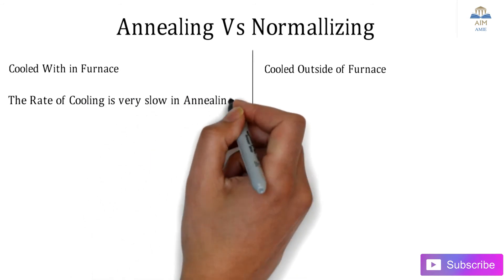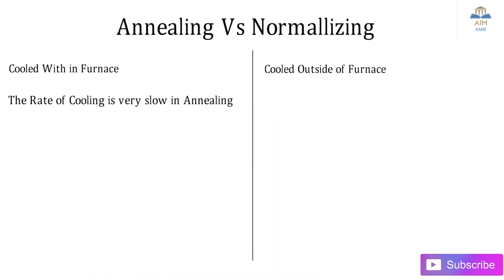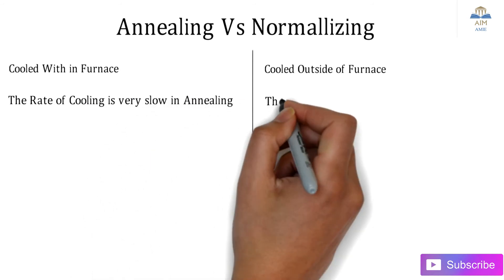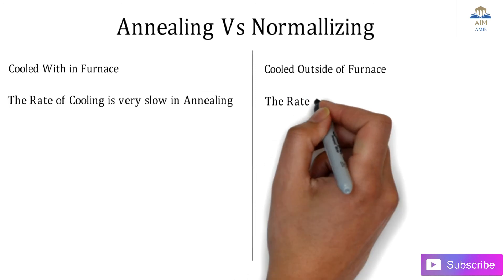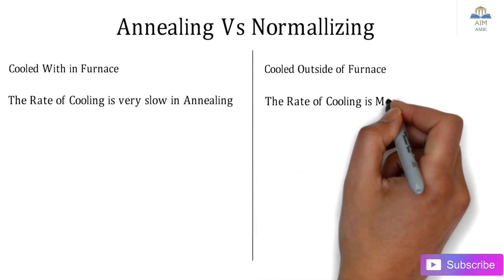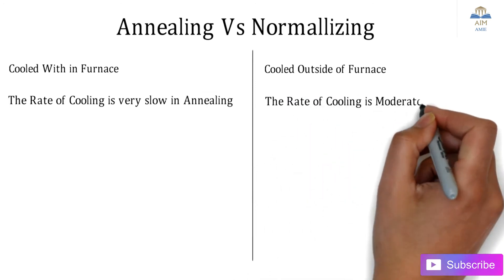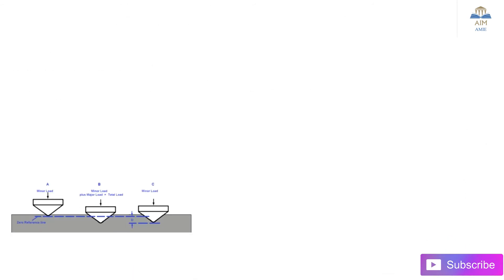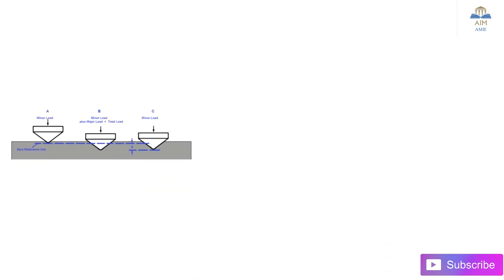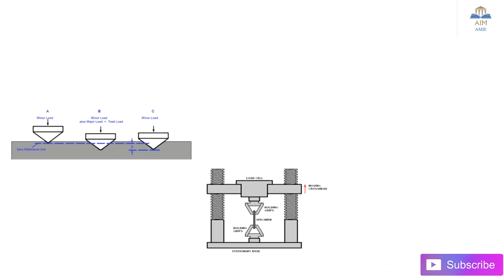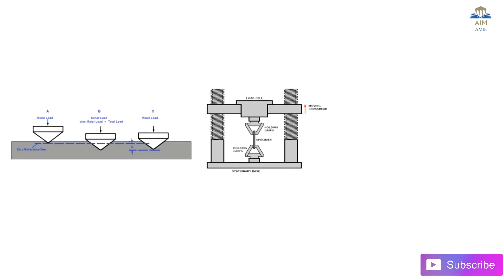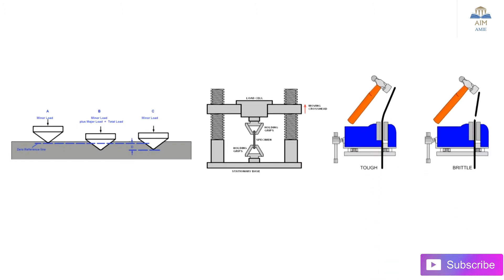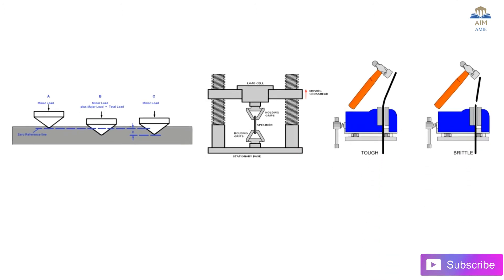The second difference is the rate of cooling. The rate of cooling is very slow in the case of annealing, while the rate of cooling is moderate in the normalizing process.